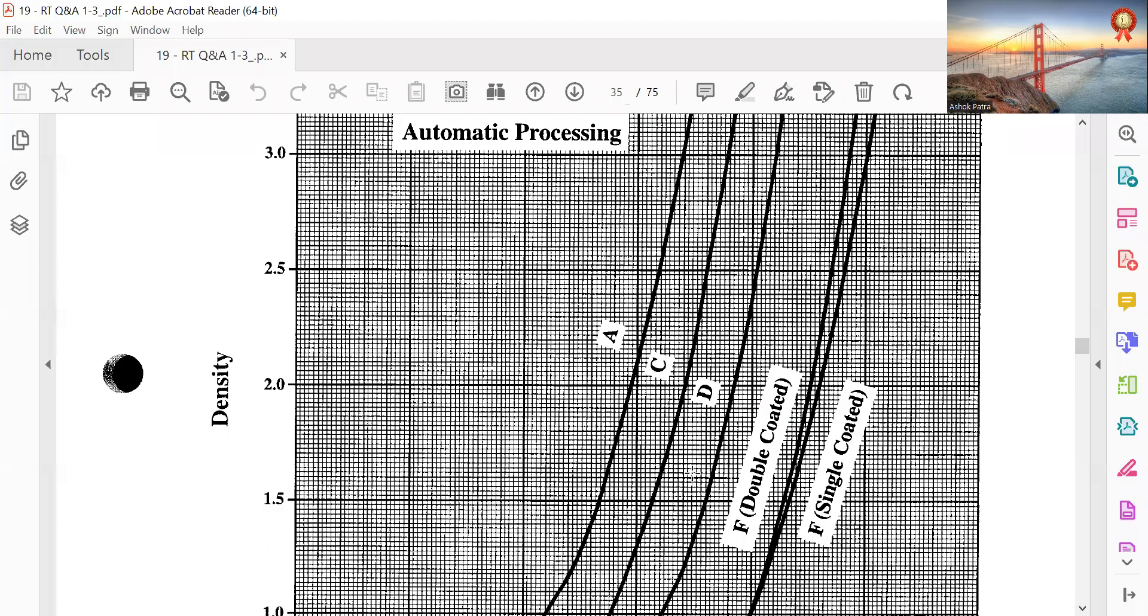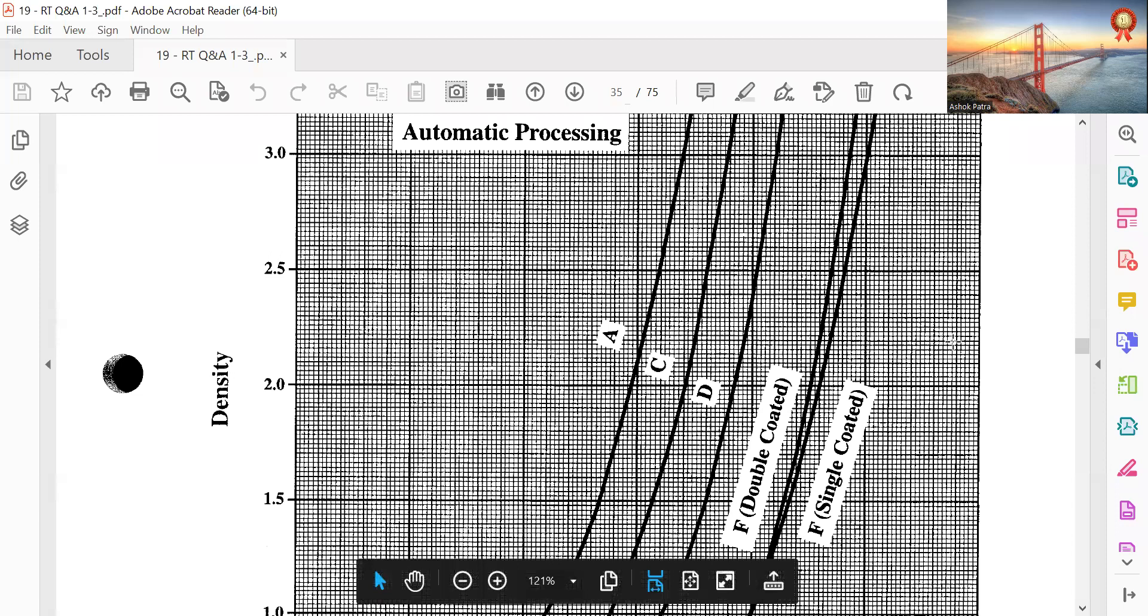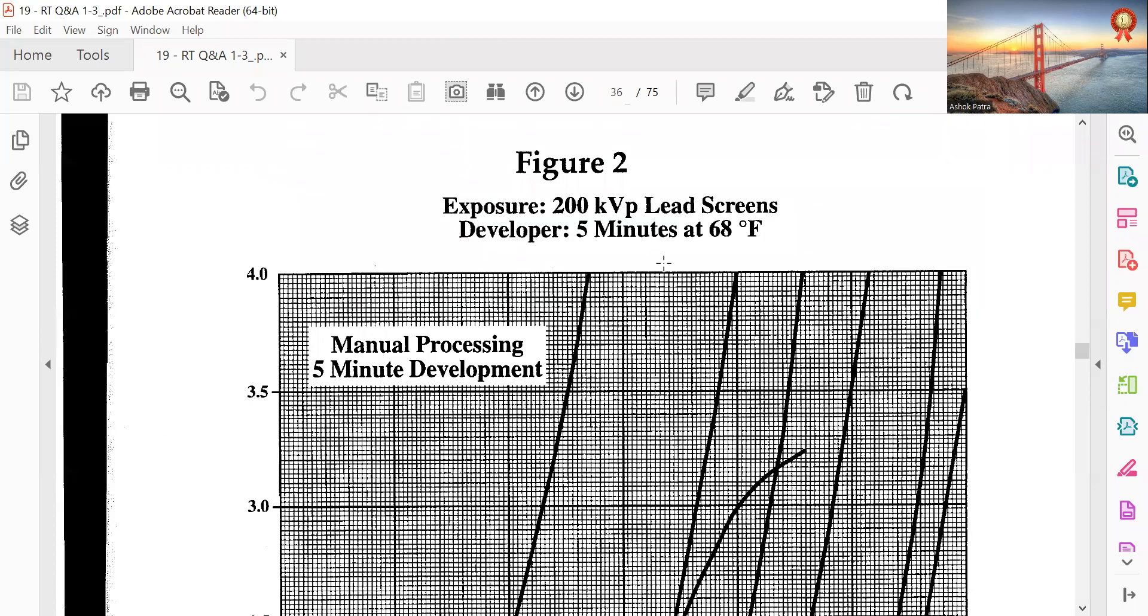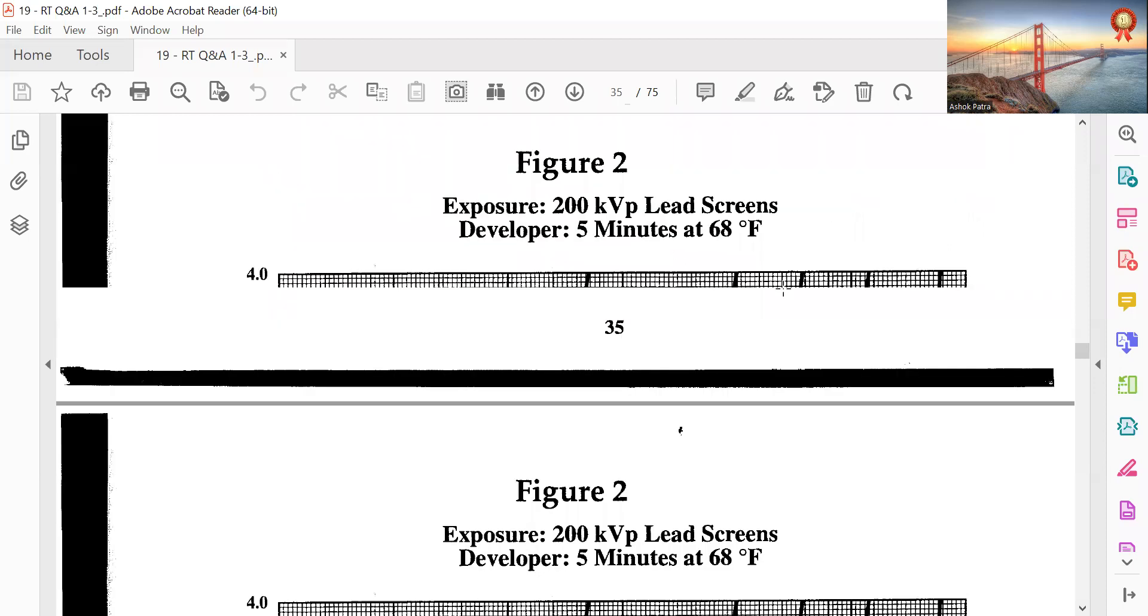Something like this they will provide you. They will provide all the things. Class 1, class 2, class 3, everything they will provide. So don't worry for that LRE and all. You have to find density from density. You have to go for LRE, Log Relative Exposure.